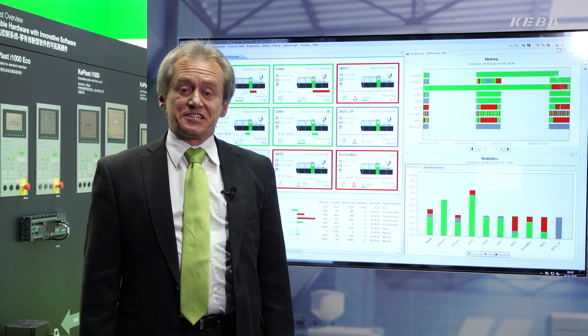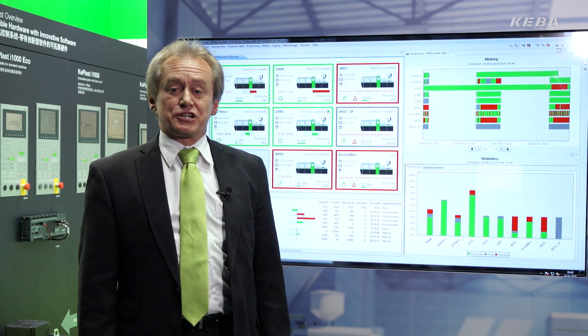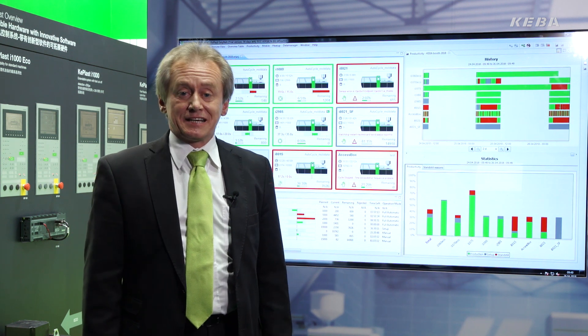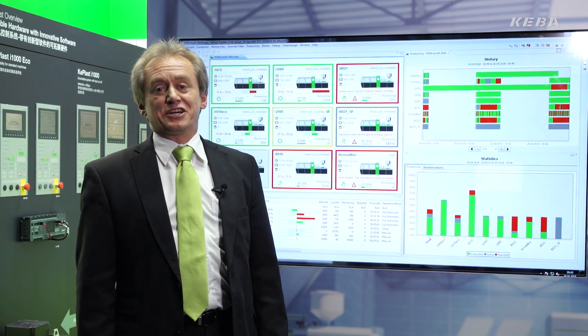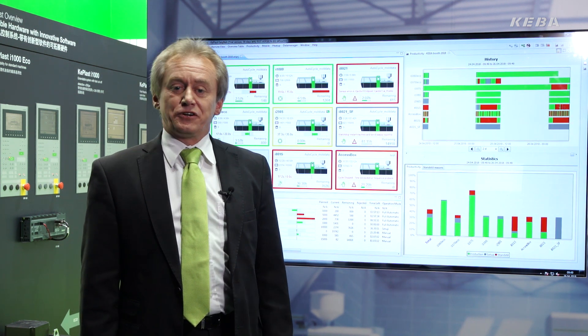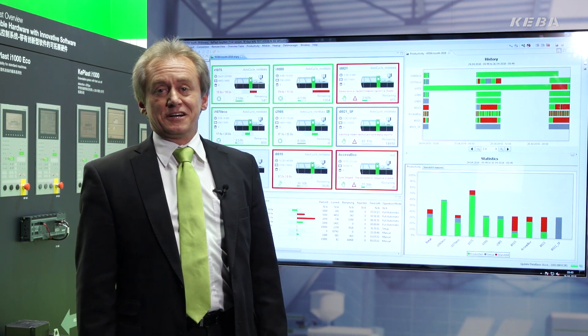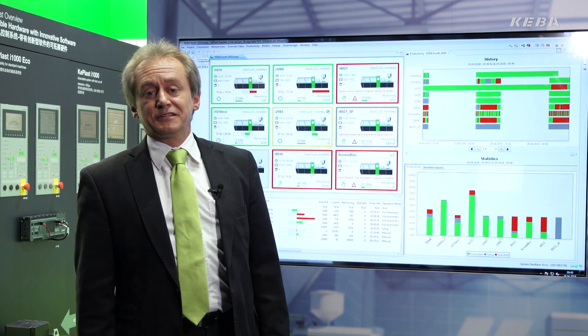With EZ-Net the production or shift manager can access all machines of the plant. The features consist of the production status, the quality data, and the productivity data of each individual machine.